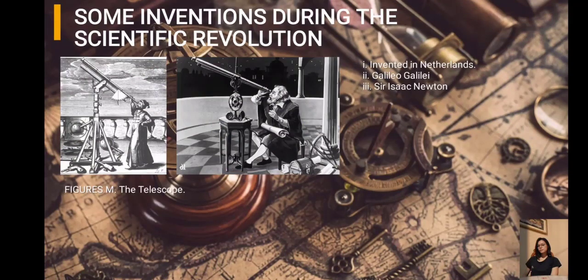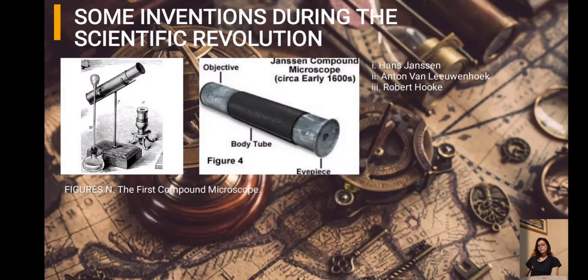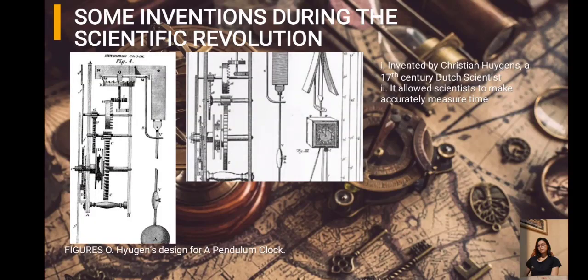Some inventions during the scientific revolution include contributions by Galileo Galilei and Sir Isaac Newton. Galileo improved the telescope in 1609, and then in 1668, Sir Isaac Newton developed it into a reflecting telescope, which used mirrors rather than lenses. The first compound microscope was invented in 1590 — an instrument used to see objects too small for the naked eye. The pendulum clock was invented by Christiaan Huygens, a 17th-century Dutch scientist.